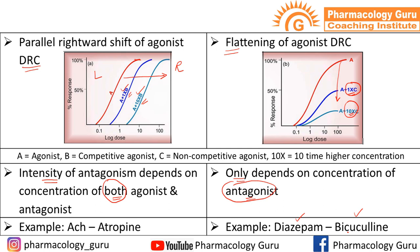Fifth, in competitive antagonism the intensity of antagonism depends on the concentrations of both agonist and antagonist, while in non-competitive antagonism it depends only on the concentration of the antagonist. Sixth, the examples: ACh and atropine illustrate competitive antagonism; diazepam and bicuculline illustrate non-competitive antagonism. These are the six key differences between competitive and non-competitive antagonism. Please let us know if you have any difficulty with this topic and we'll try to solve your queries.